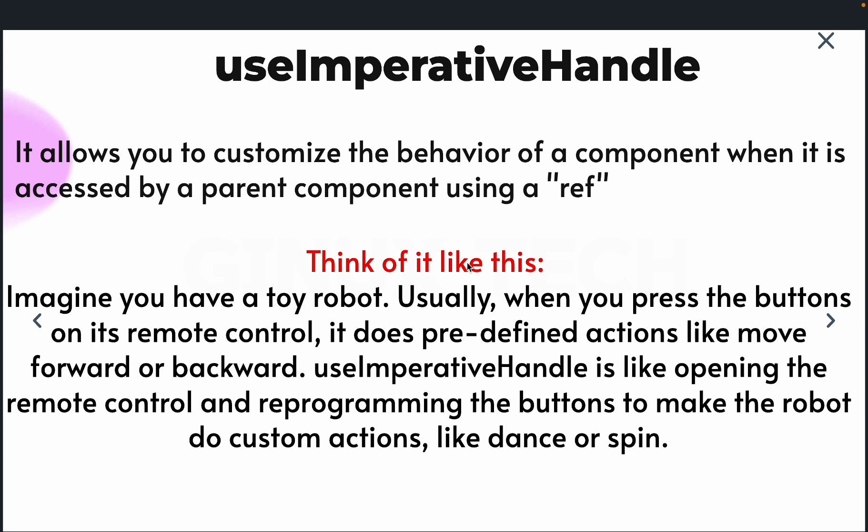useImperativeHandle allows you to customize the behavior of a component when it is accessed by a parent component using a ref. Think of it like this: imagine you have a toy robot. Usually when you press the button on its remote control, it does predefined actions like move forward or backward. useImperativeHandle is like opening the remote control and reprogramming the buttons to make the robot do custom actions like dance or spin. So from a parent component, you can control actions being performed by a child component.